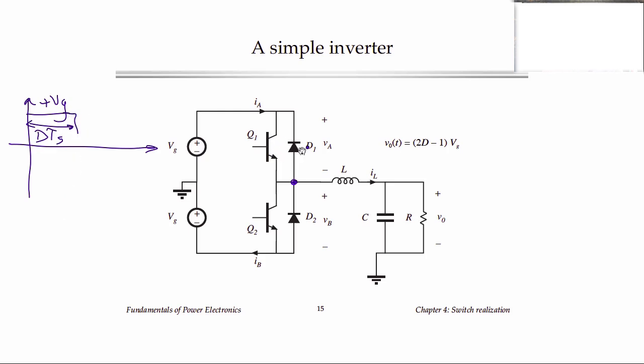Then we switch the upper devices off, turn the lower devices on, and that pulls this node down to here, which is minus VG. And we'll leave them in the lower position for the remainder of the switching period for D prime TS. And then we repeat.